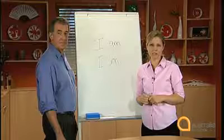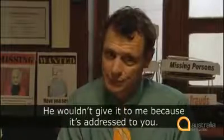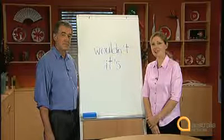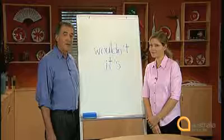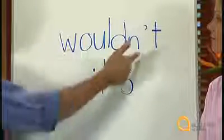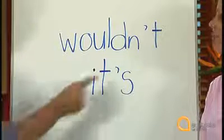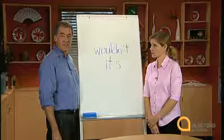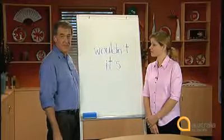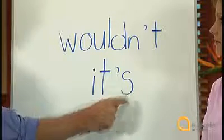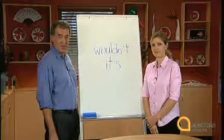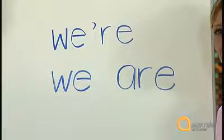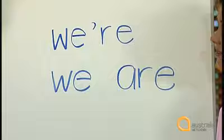Now listen for two more contractions: 'He wouldn't give it to me because it was addressed to you.' The two contractions are 'wouldn't' and 'it's'. What's the missing sound in 'wouldn't'? The missing sound is 'o'. Would not — wouldn't. So the apostrophe goes between the N and the T. What is 'it's' short for? It's is the contraction of 'it is', so the apostrophe comes between the T and the S. Now listen for another contraction: 'We're closing in, Miss Lee. Fear not.' We're — the missing sound is 'a'. We are — we're.